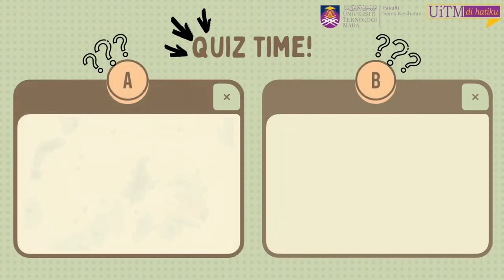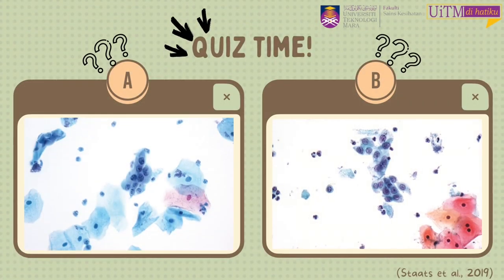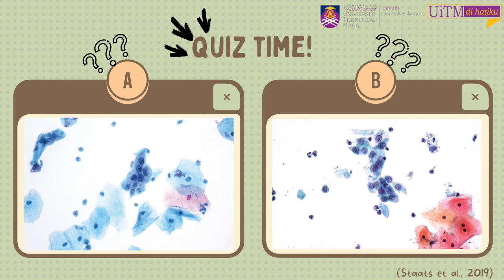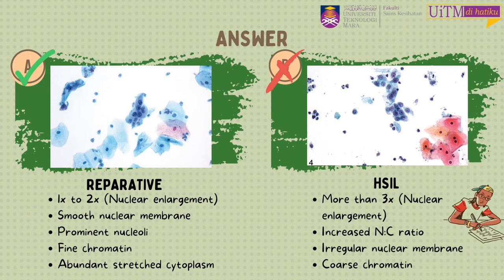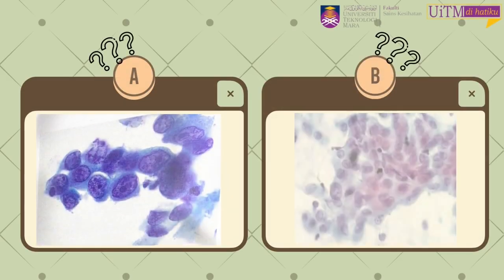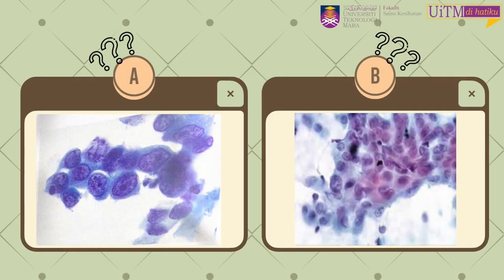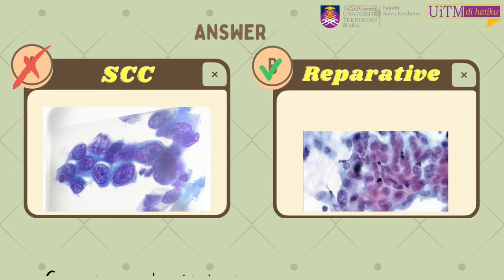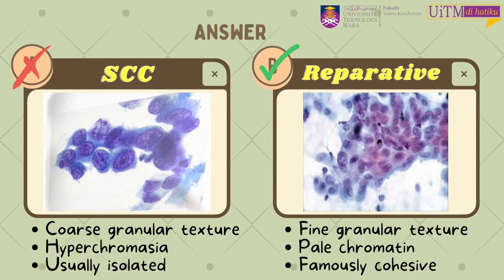Let's take a break by answering a quiz. Which one shows reparative changes — is it A or B? The answer is A, because the cells have one-to-two times nuclear enlargement, smooth nuclear membrane, prominent nuclei, fine chromatin, and abundant stretched cytoplasm. For the next question, between the two pictures, which one shows reparative changes — A or B? The answer is B, because it has fine ground texture, pale chromatin, and cells are famously cohesive.